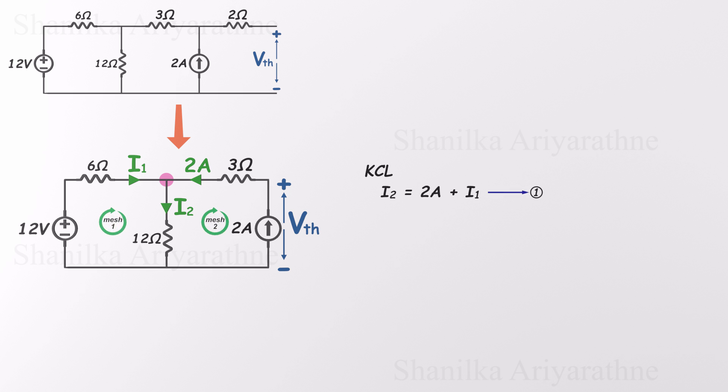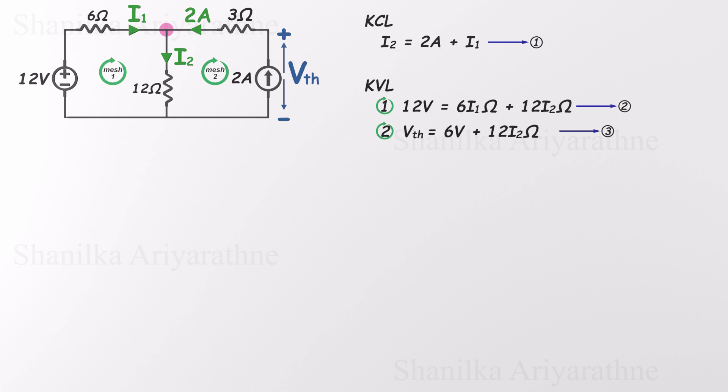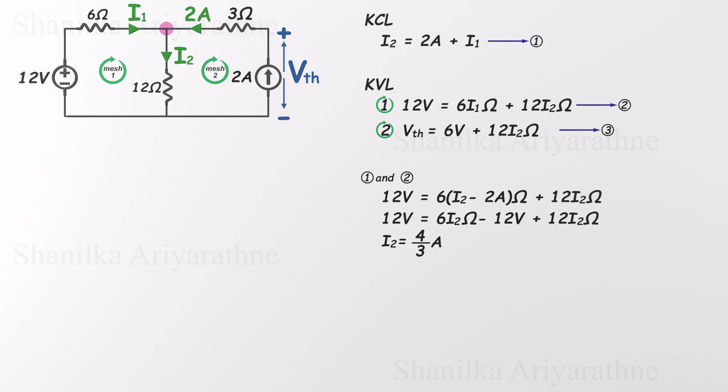Next, we look at the two loops in the circuit and apply Kirchhoff's voltage law to each one. That gives us two more equations. Now we've got three unknowns: VTH, I1, and I2 in three equations. Time to solve. First, we eliminate I1 using the first two equations. That gives us the value of I2: I2 equals 4 over 3 amps. Now substitute I2 into the third equation, and we find VTH is 22 volts. So the open circuit voltage across the terminals, our Thevenin voltage, is 22 volts.